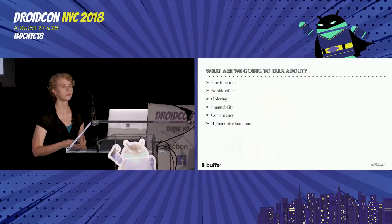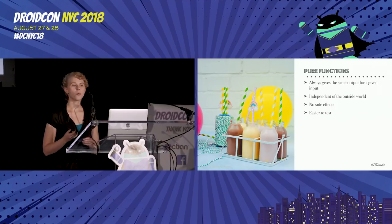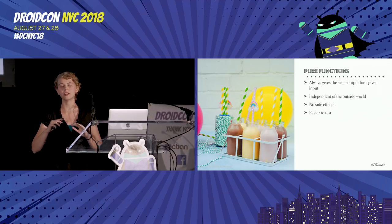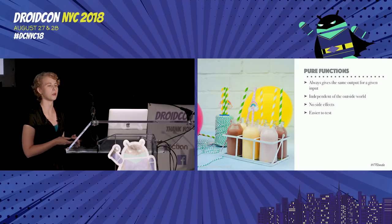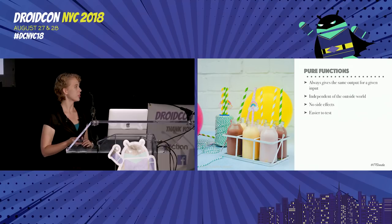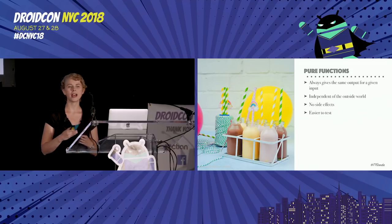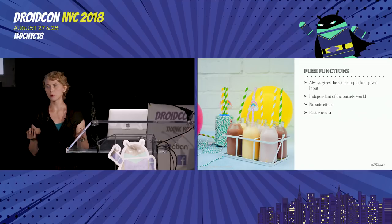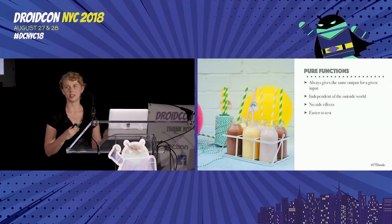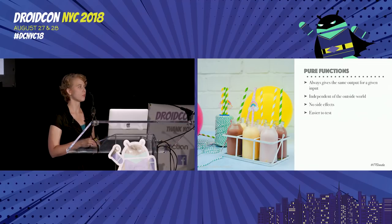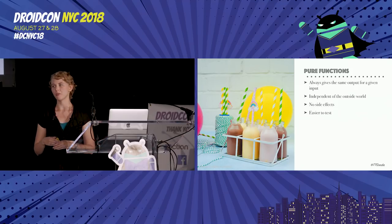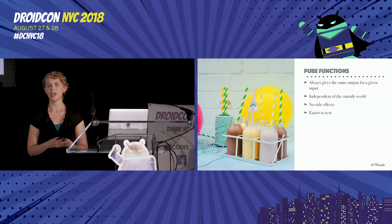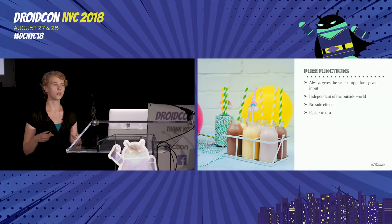Starting at the top with pure functions. Pure functions always give the same output for a given input, even if that input is nothing — an empty input is still considered an input. Everything required for the operation is passed in. This can make things easier to test. If you think about this from a math perspective, addition only cares about the two numbers you pass in and gives the same result every time. Every time you pass in a 2 and a 3, you're going to get a 5.